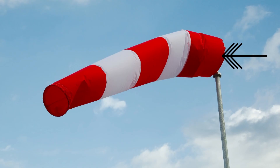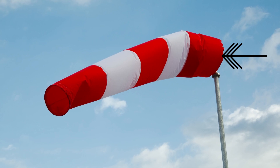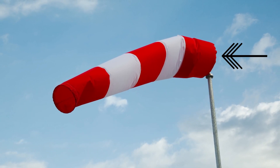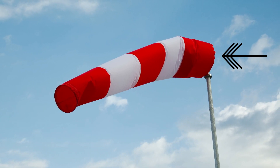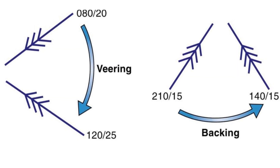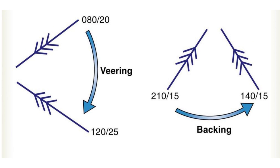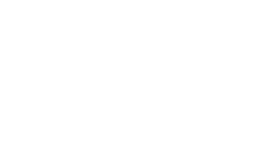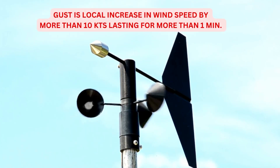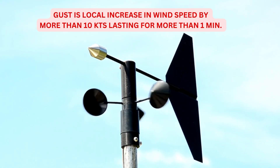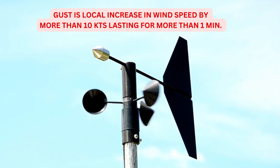Wind direction is always reported as the direction from which wind is blowing from and not where it is going to. Wind is said to be veering when the direction changes clockwise and backing when its direction changes anti-clockwise. Gust is a local increase in wind speed by more than 10 knots lasting for more than 1 minute.